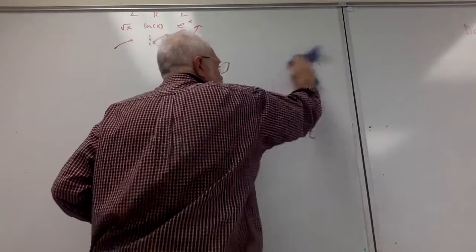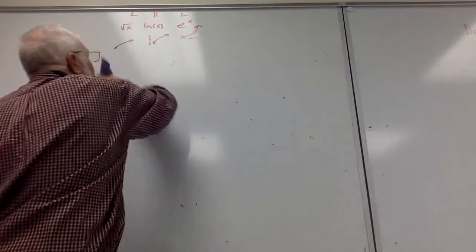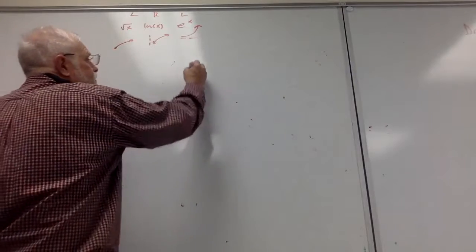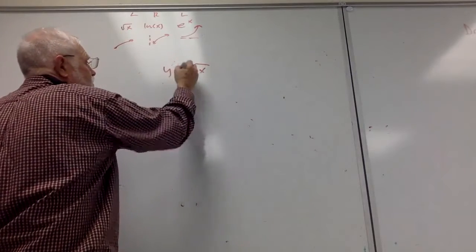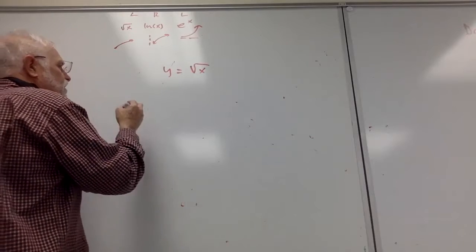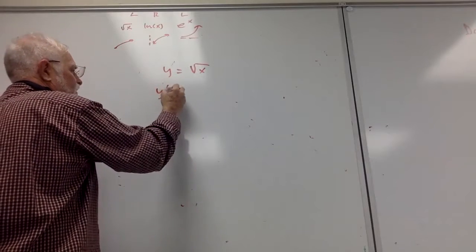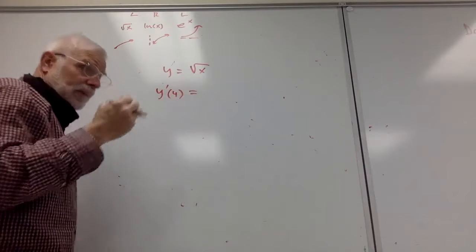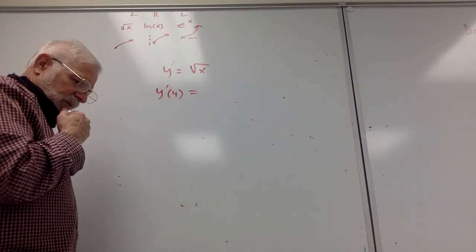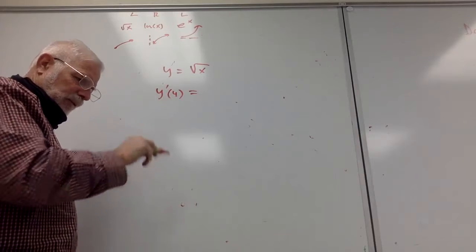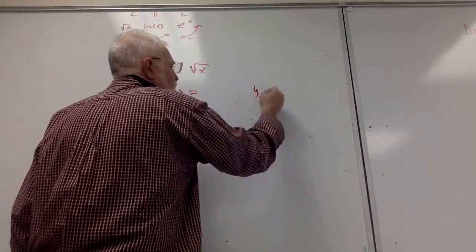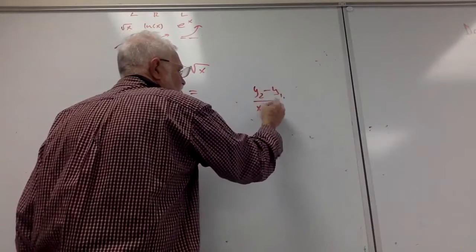Let's try again with a new function. Let's look at the square root of x, and let's write a limit expression that represents y prime at 4. So y prime at 4 is the rate of change — it's the slope of the tangent. Slope is y2 minus y1 over x2 minus x1.